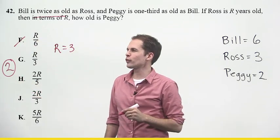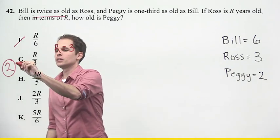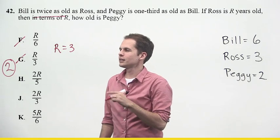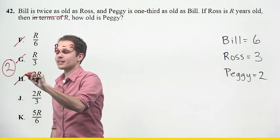Then I try the next one. r over three. Is that two? No. That's one. Then I try two times three divided by five. That's six over five. That's not right.